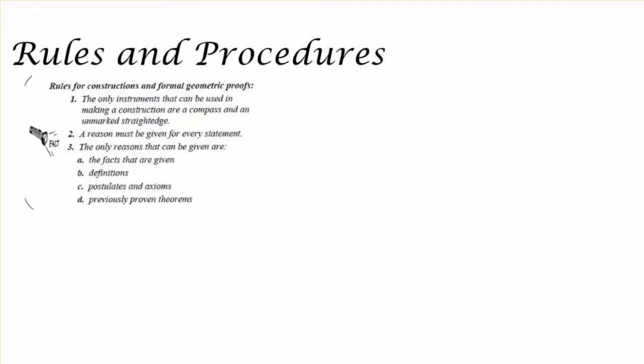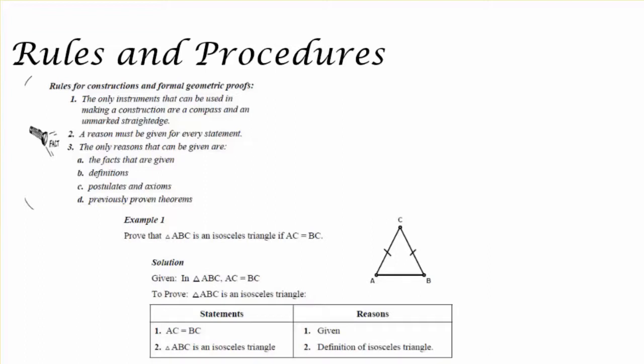When making proofs, it's important to follow certain rules and procedures. For one, when doing constructions in a proof, we have to make sure that the only instruments we use are a compass and a straight edge. Every statement we make must be given a strong reason, and those reasons must be limited to facts, definitions, and as mentioned before, postulates, axioms, and theorems.